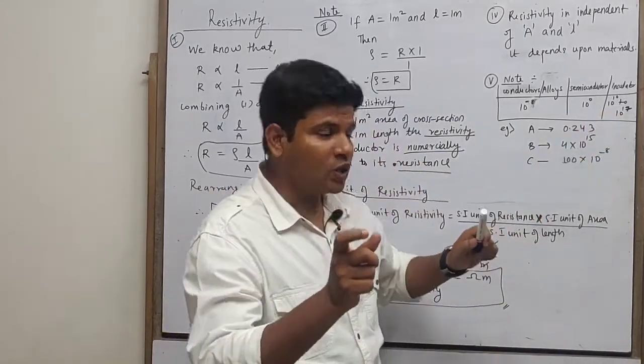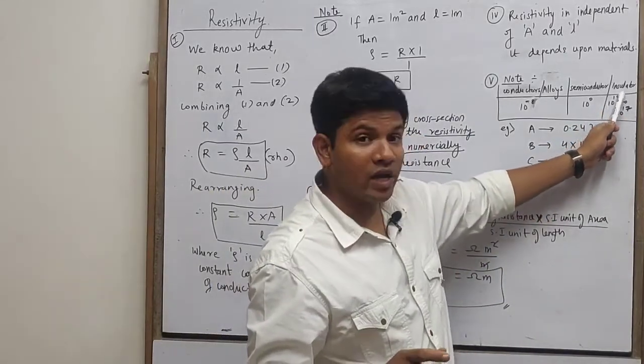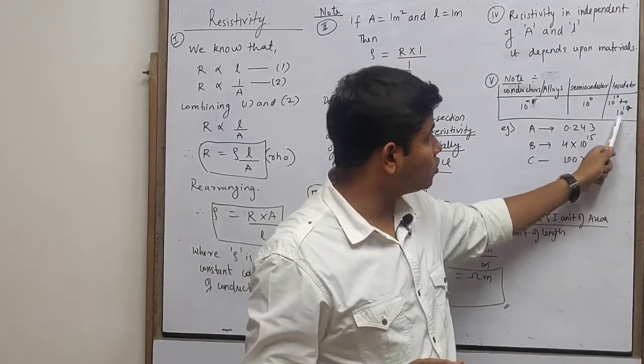If it is an insulator, resistivity is 10 raised to 10 to the power 17.